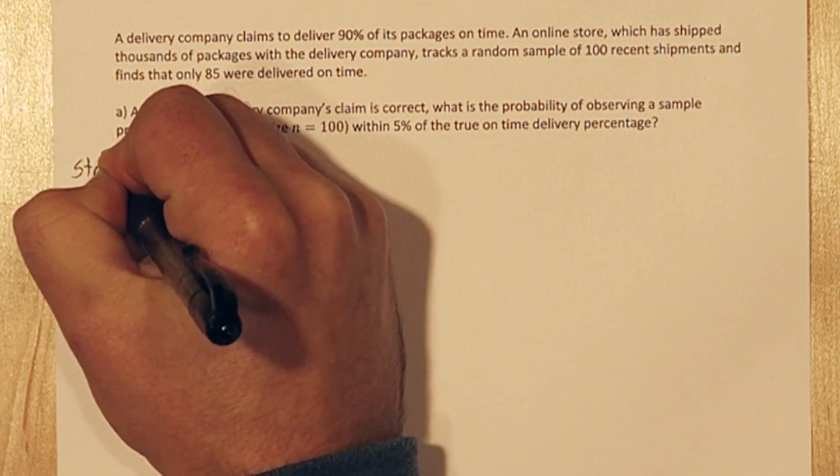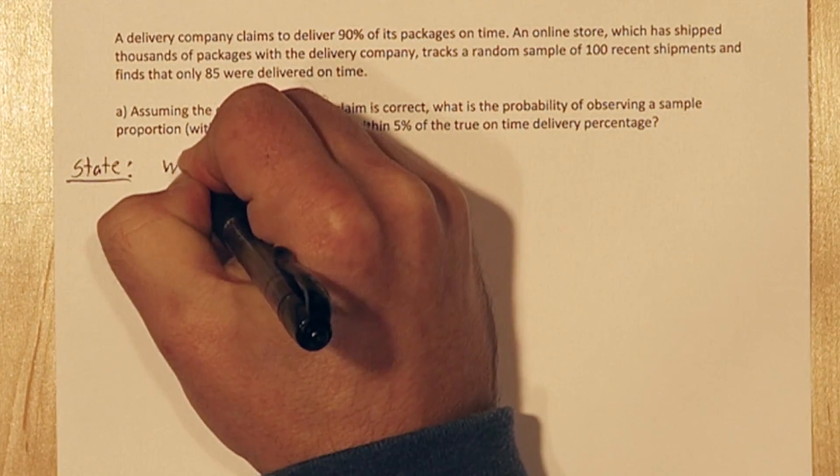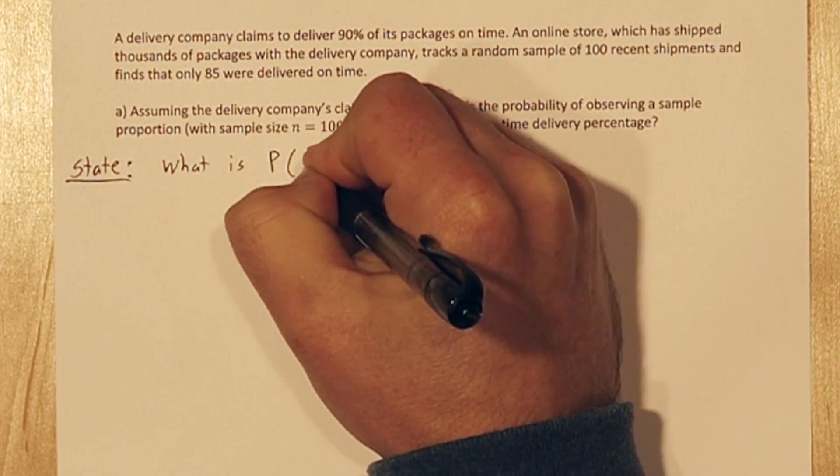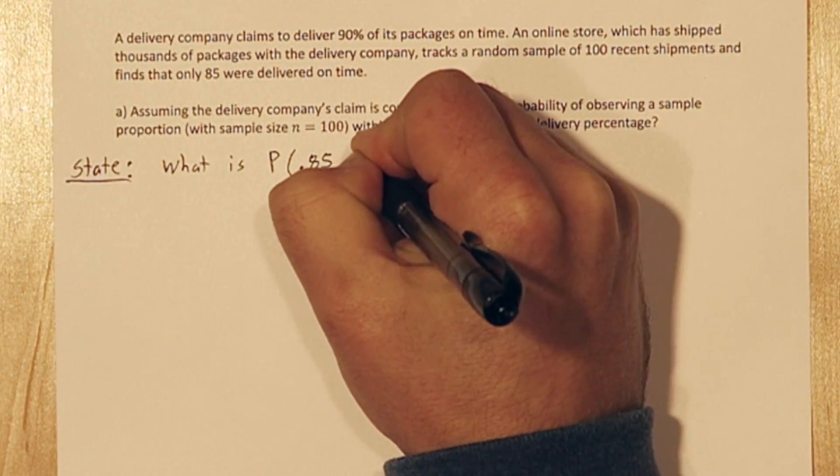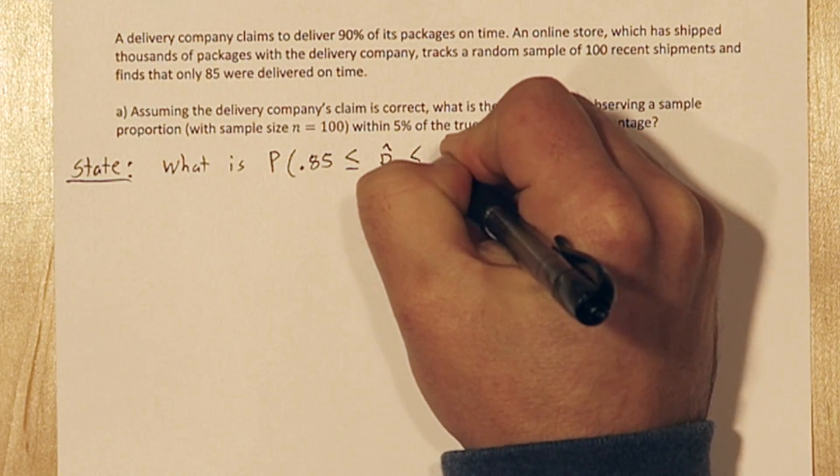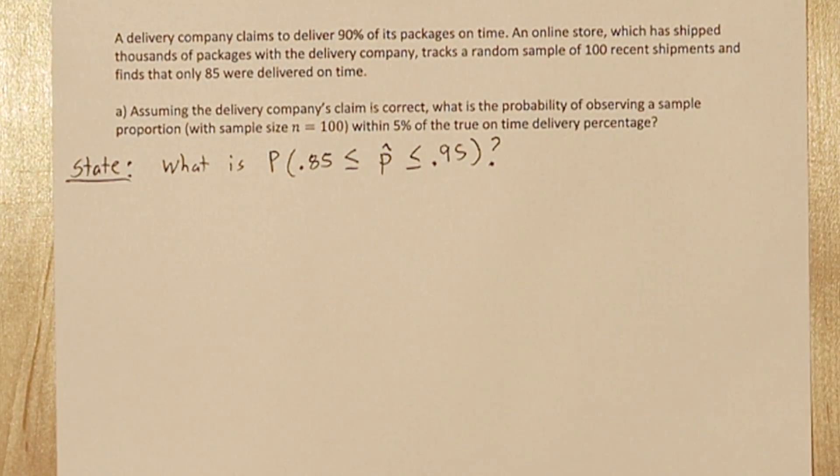Let's use the four-step process to solve this one. If we assume the delivery company's claim is correct, what is the probability of observing a sample proportion within 5% of their claim, 90%? That is, what's the probability our sample proportion is between 0.85 and 0.95?